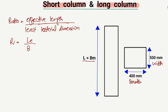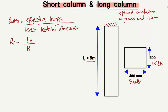There are different types of columns — for example, a pin-end column and a fixed-end column. In our case, let's suppose it is a fixed-end column, meaning both ends are fixed. For a fixed-end column, the effective length le is equal to 0.5 times L. So le equals 0.5 multiplied by 8 meters, which gives us 4 meters.